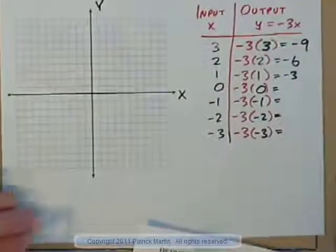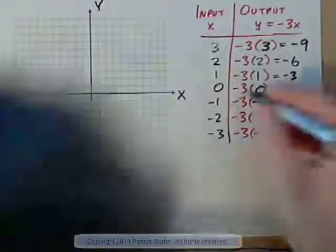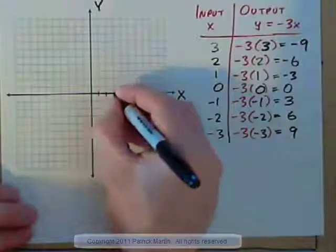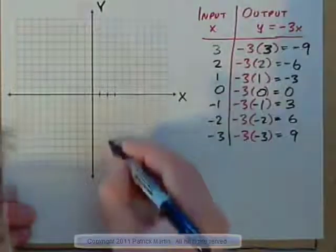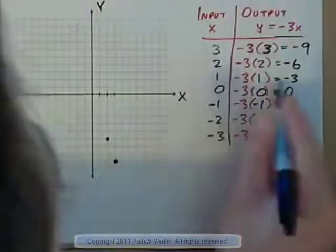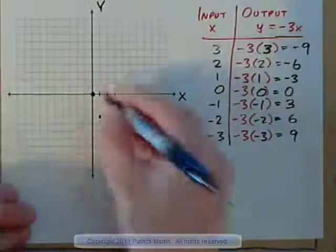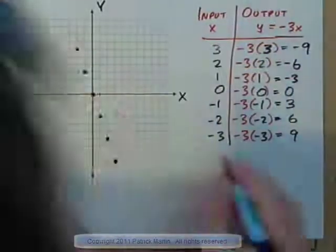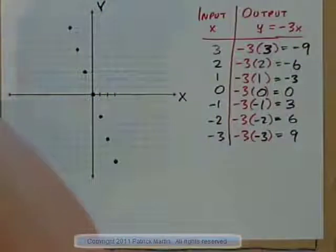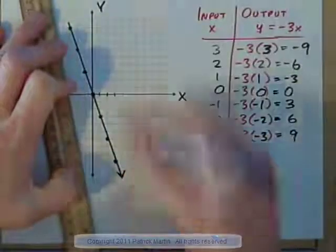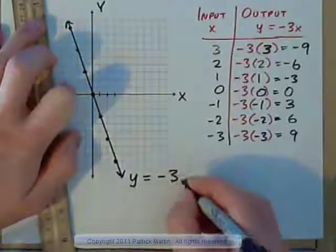Anything times 0 is 0. Negative times negative: positive 3. Negative times negative: positive 6. Negative times negative: positive 9. Now if we plot those — x is 3, y is negative 9, that's down there; x is 2, y is negative 6; x is 1, y is negative 3; then 0, 0; negative 1, positive 3; negative 2, positive 6; negative 3, positive 9 — we can draw a straight line through that. Don't be afraid to label your graph: the output is negative 3 times the input.